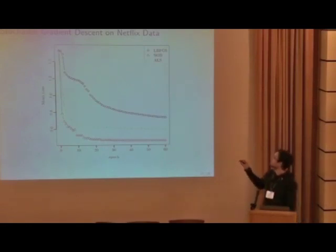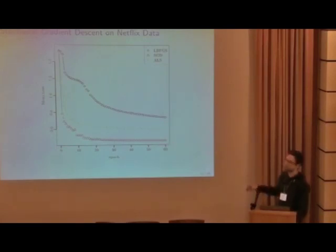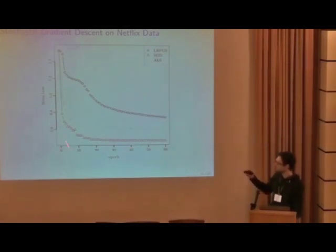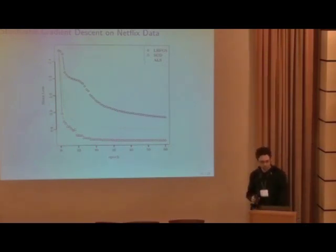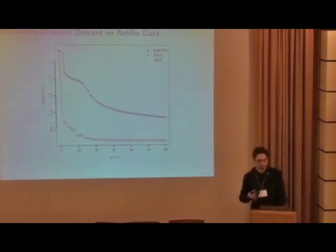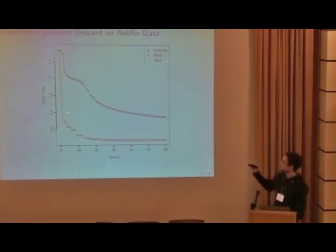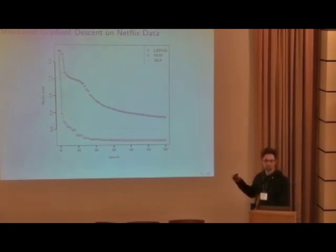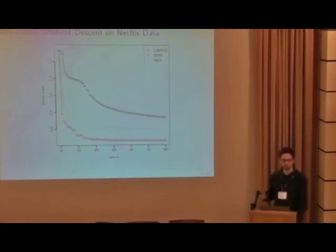Here are three different algorithms: the black one is LBFGS, the green one is alternating least squares, and the red one is SGD, which is the simplest of the algorithms. The x-axis shows how often the data was scanned and the y-axis shows quality. SGD performs very well in this metric. If you plot by time, ALS is much, much slower per epoch because it requires much more computation — it scales cubically with the rank of the factorization, whereas SGD is linear. So for higher-rank factorizations there will be a big difference in wall time.